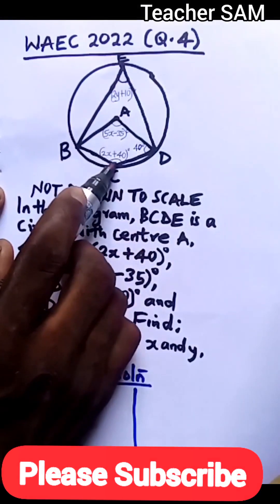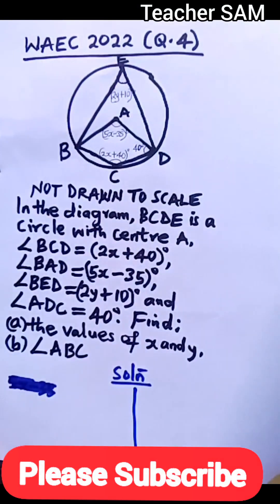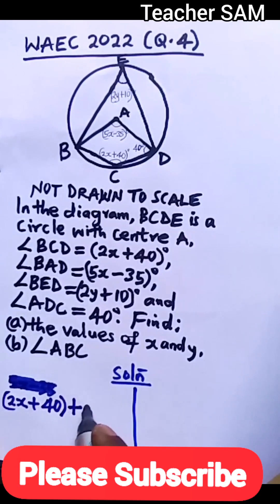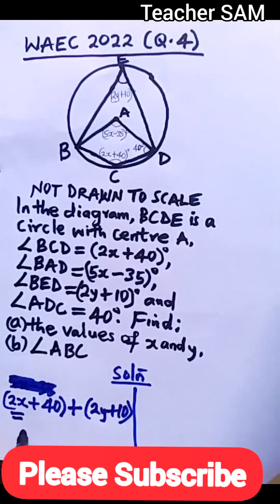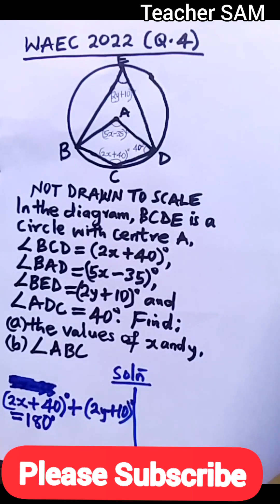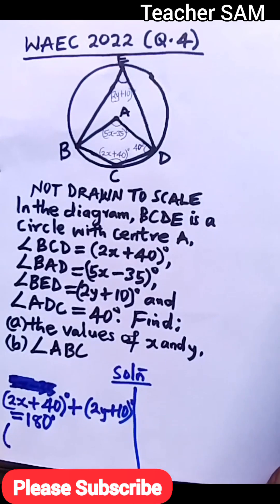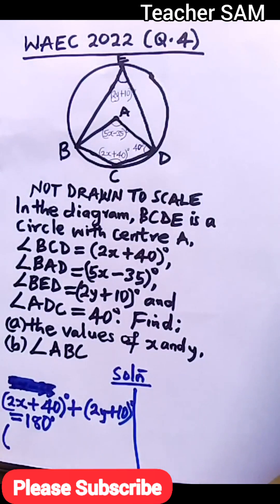So this angle and this angle — they are opposite and they are supplementary. We can write that 2x plus 40 plus 2y plus 10 is equal to 180 degrees. The reason is that opposite interior angles of a cyclic quadrilateral are supplementary.